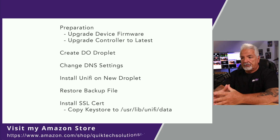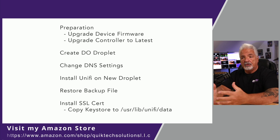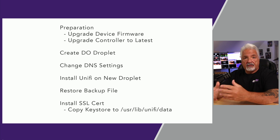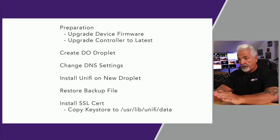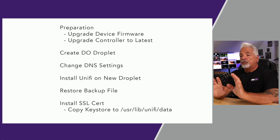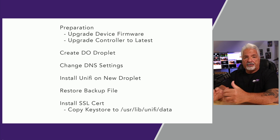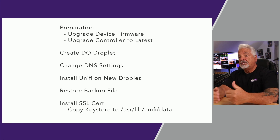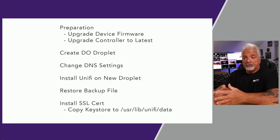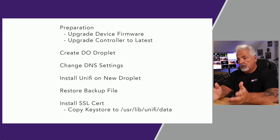Then create the new DigitalOcean droplet. Once the new droplet was created and issued an IP address, I changed my DNS settings because I'm using an FQDN, so I pointed the FQDN to the new IP address of the new controller. Then I ran the Unifi install script that I got from Glenn R — Willie also shared it with me at one point. The reason I did it in this order was that by the time I got through the Unifi installation, that gave the DNS enough time to propagate, and we were able to restore the backup file at the end. Finally, I installed my SSL certificate — I had a backup copy of my keystore on my local hard drive, so I copied it to /usr/lib/unifi/data on the new server.